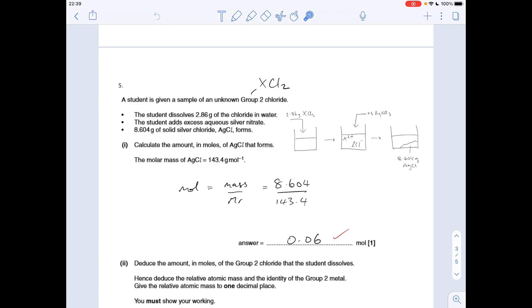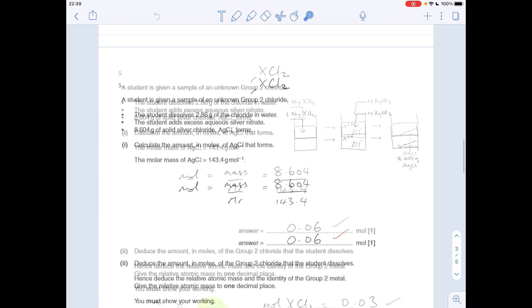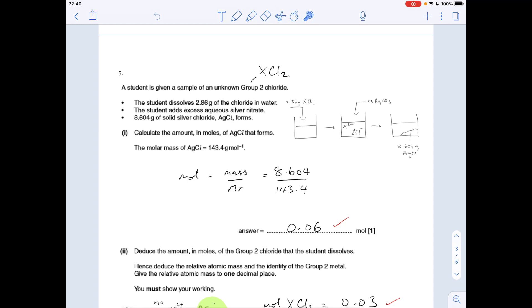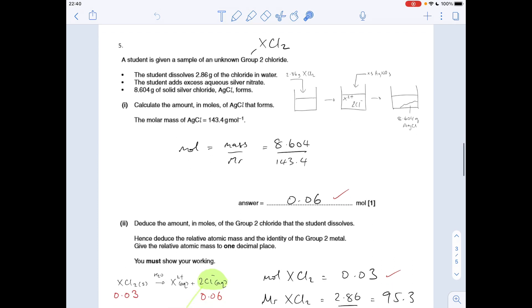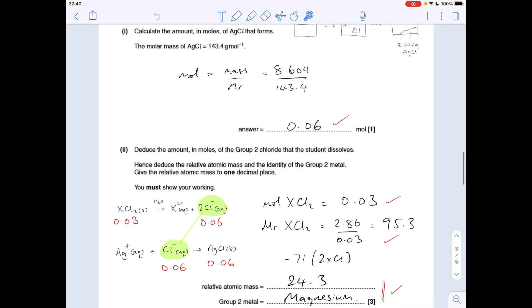Second part of the question we've got to establish what the group 2 metal is in this chloride and we've got to give the relative atomic mass to one decimal place. I've got this little sort of flow chart here on the left hand side, so I'll just run through the stuff in black first and then we'll talk about the numbers.